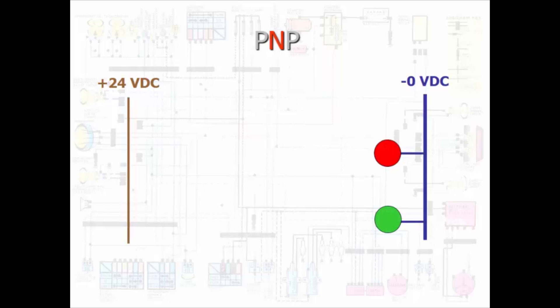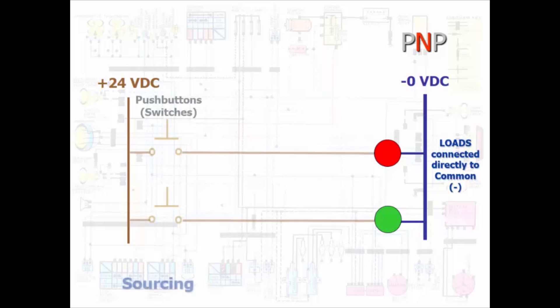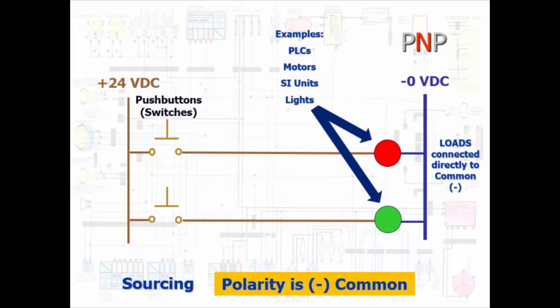The PNP circuit will have the loads connected directly to the negative common and power can only get to the loads through a closed switch. The switch is the source to the load. Here are some examples of different loads that are used every day.